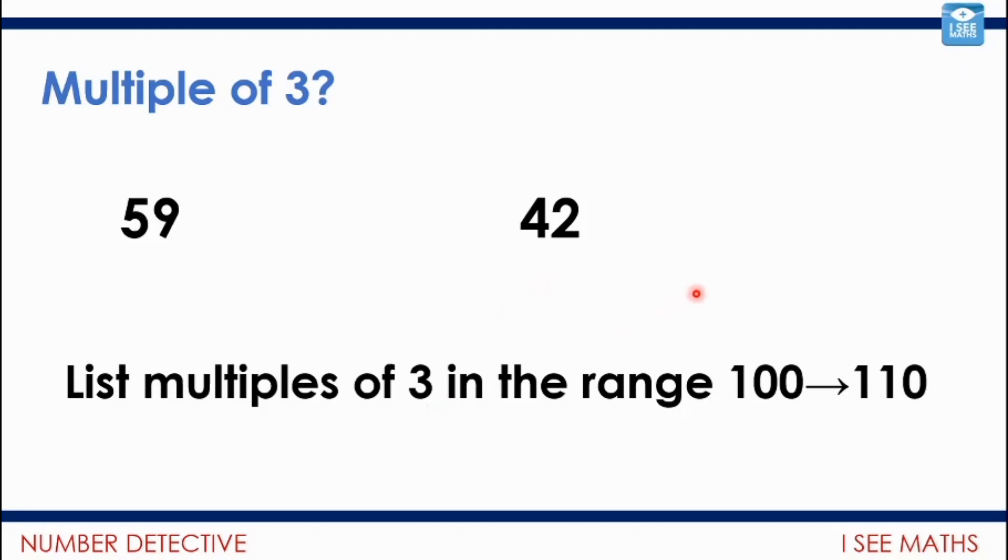Now, multiples of 3 in the range 100 to 110. There's a few ways you could do this. I think I actually multiplied up to get to 99. I know that 99 is a multiple of 3. But you could have gone to 120 and counted down. But anyway. So I went up to 99 and added on another 3. That got me to 102. Another 3, 105. And another 3, 108.